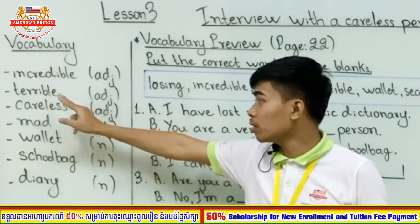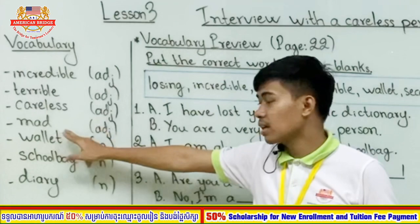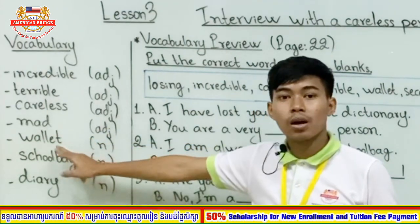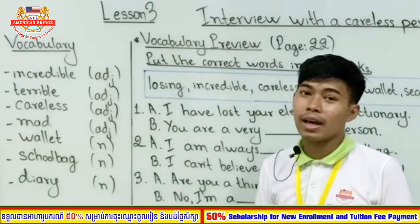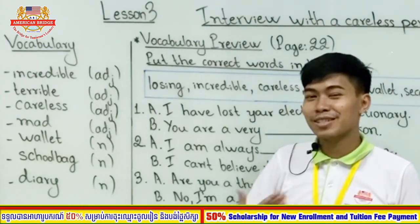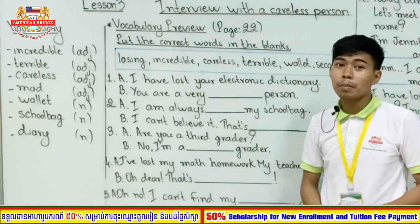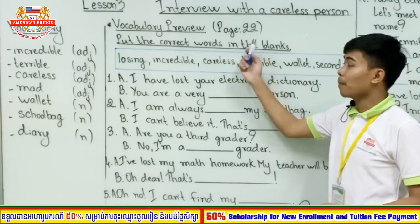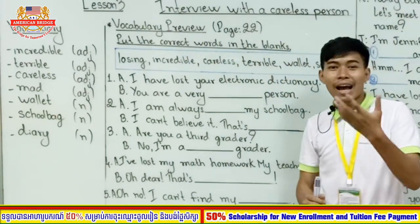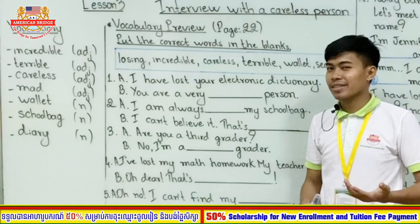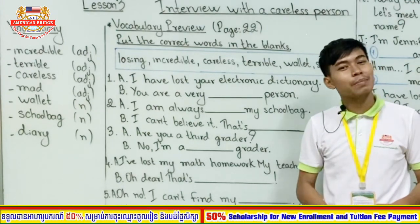So those are the vocabulary words: incredible, terrible, careless, mad, wallet, school bag, diary. Now let's go to the exercise — vocabulary preview on page 22. The title of Lesson 3 is 'Interview with a Careless Person.' Are you a careless person? I hope not! I'm sure you are hardworking and clever — that's why you study here.